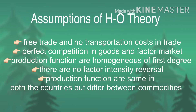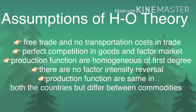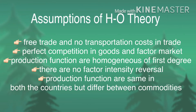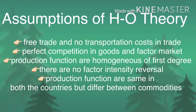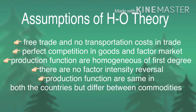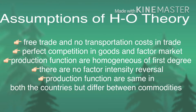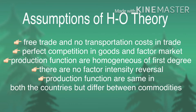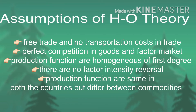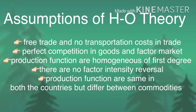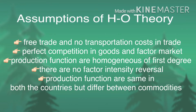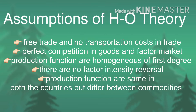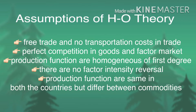These assumptions are not difficult to understand. The first assumption is an abstraction to facilitate analysis — it means that commodity prices under trade will be the same in both countries. The second assumption means that the factors of production will be allocated in an optimal way.